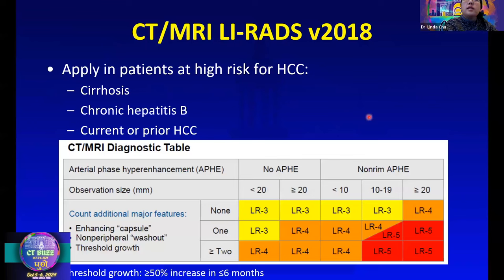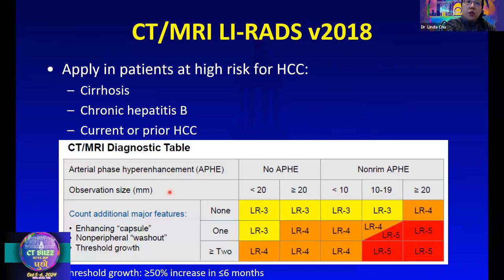We can apply CT and MRI LIRADS for patients at high risk of HCC, including patients with cirrhosis, chronic hepatitis B, and patients with current or prior HCC. The important major features in the diagnosis of HCC include arterial phase hyper-enhancement, larger lesion size, the presence of an enhancing capsule, non-peripheral washout, and threshold growth.